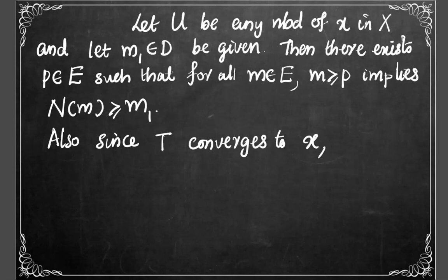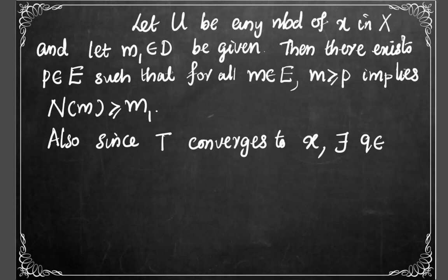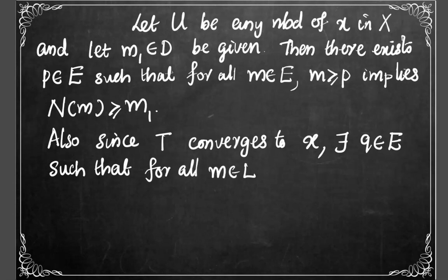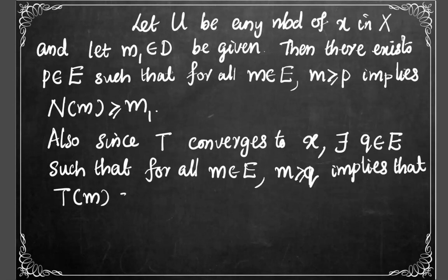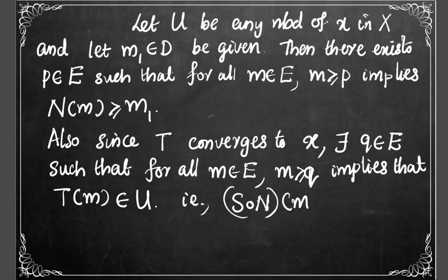Also, since the subnet t converges to the point x and since U is a neighborhood of x, there will exist some q element of the directed set E such that for all m element of E, m follows q will imply that t(m) belongs to U — that is, s∘N(m) belongs to U, since t = s∘N by the definition of subnet.